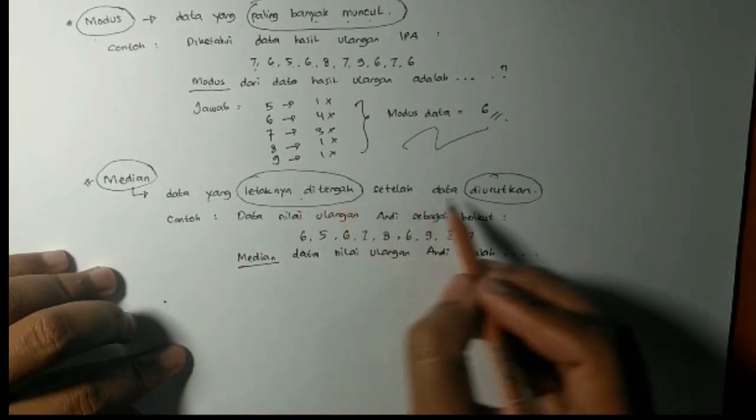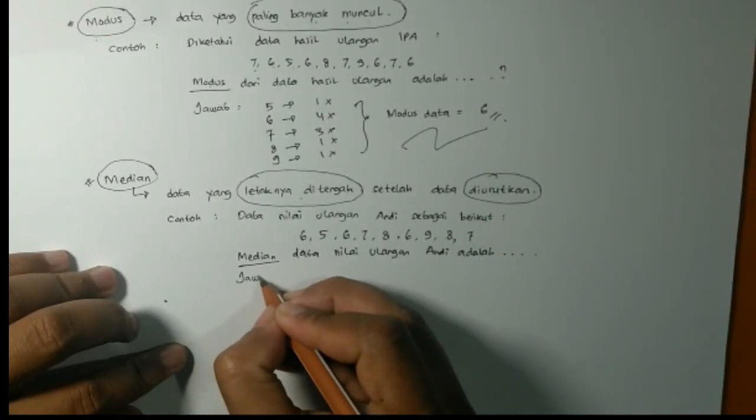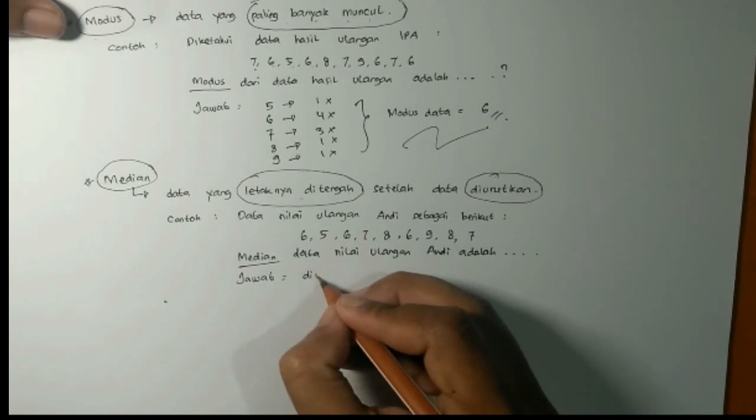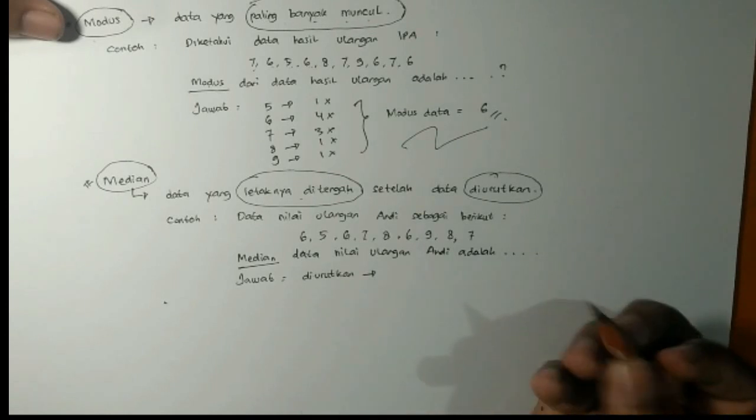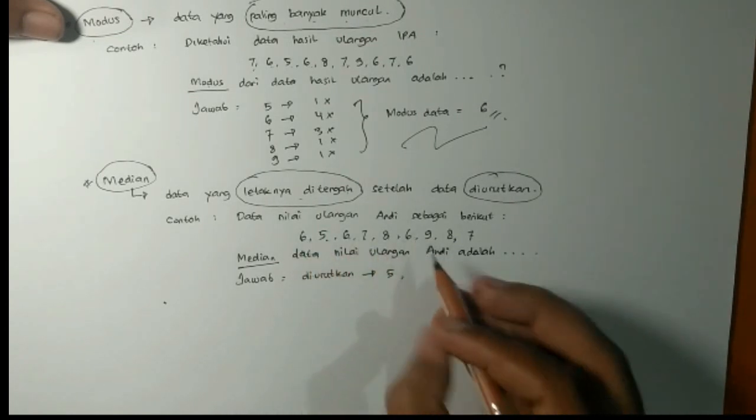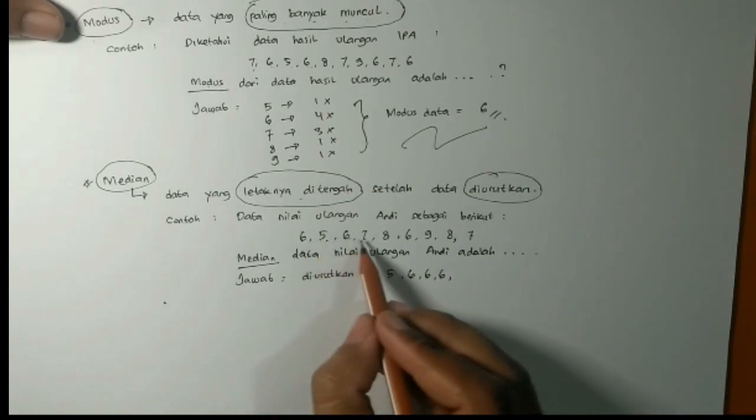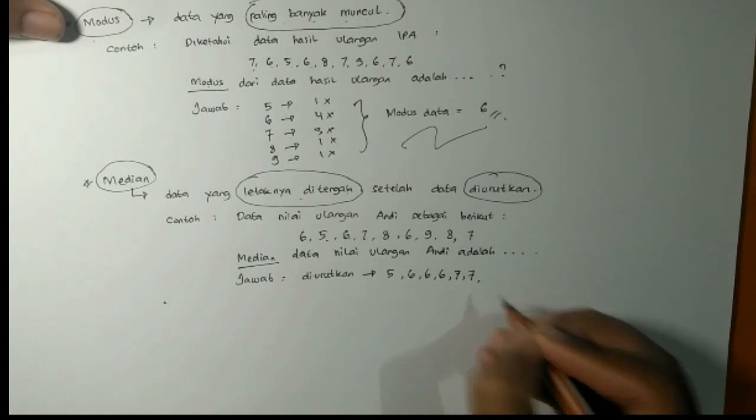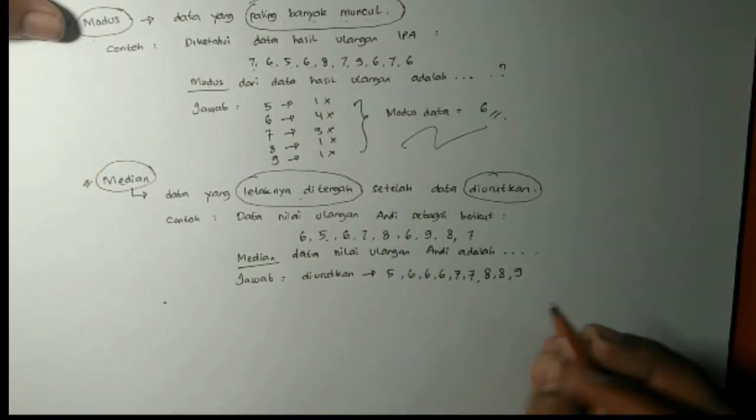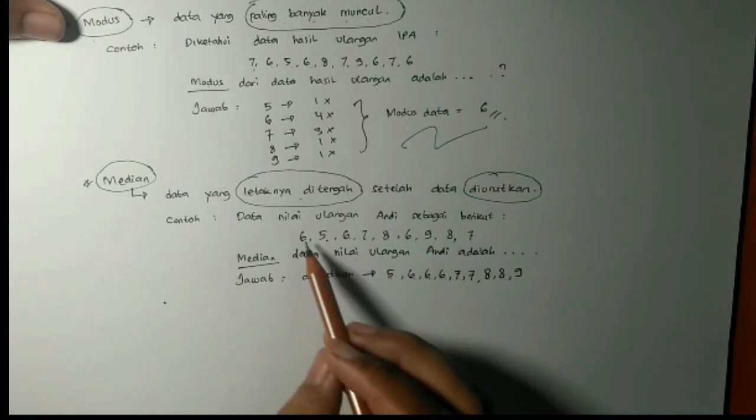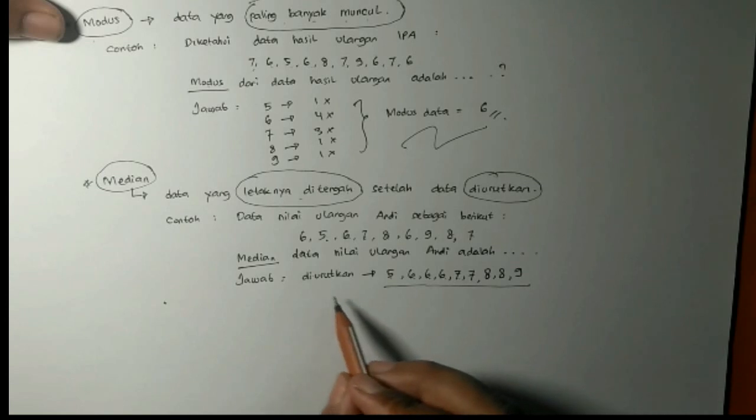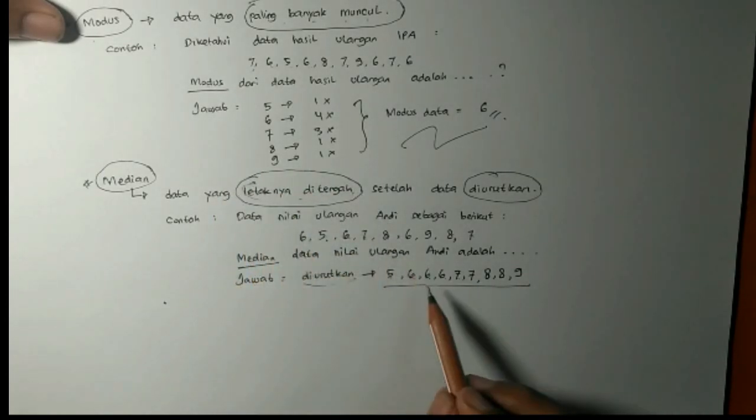Jadi median itu data yang letaknya di tengah, tapi harus diurutkan terlebih dahulu. Maka kita urutkan dari yang paling kecil. Mereka ulangan Andi yang paling kecil dapat 5. Diurutkan terlebih dahulu. Yang paling kecil dapat 5, 1 kali. 6, 1, 2, 3. 6, 3 kali. Kita tulis 3 kali. 7 ada 2. 7 kita tulis 2 kali. 8 ada 2. 8 ada 2. Kemudian 9 ada 1. Ada 9 data ya. Ganjil. Kalau datanya ganjil itu pas 1 data di tengah. Sehingga kalau 9 data maka data yang tengah-tengah itu data kelima ya.